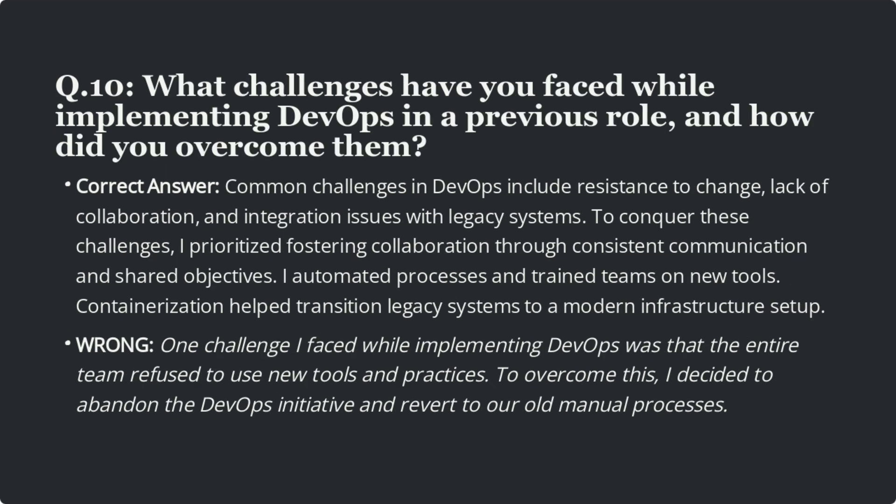Question 10: What challenges have you faced while implementing DevOps in a previous role, and how did you overcome them? Common challenges include resistance to change, lack of collaboration, and integration issues with legacy systems. To overcome these, I prioritized fostering collaboration through consistent communication and shared objectives, automated processes, and trained teams on new tools. Containerization helped transition legacy systems to a modern infrastructure. Wrong answer: abandoning the DevOps initiative and reverting to old manual processes — this is absolutely wrong.